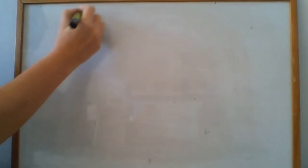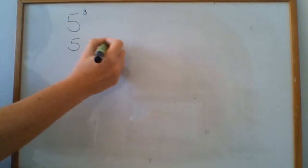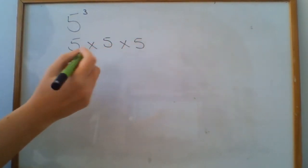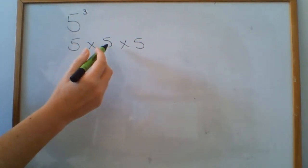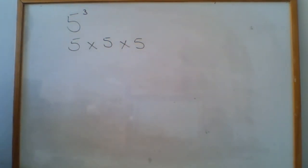Number three, we have five. And we have the little number three, which means we've got three dimensions. So it means we've got five multiplied by five, multiplied by five. And if we do that, five times five is 25 times five is 125. So your answer for number three is 125.